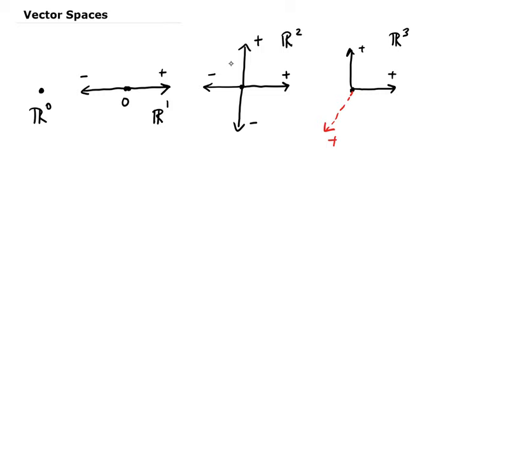You have the real line, the point, the real line, the plane, and then three dimensions. Anything bigger than this, anything going beyond R^3, we can't visualize the geometry. So we have to rely on the theorems and the concepts. That's why vector spaces are very important, because without vector spaces, we can't really visualize what we're trying to deal with.